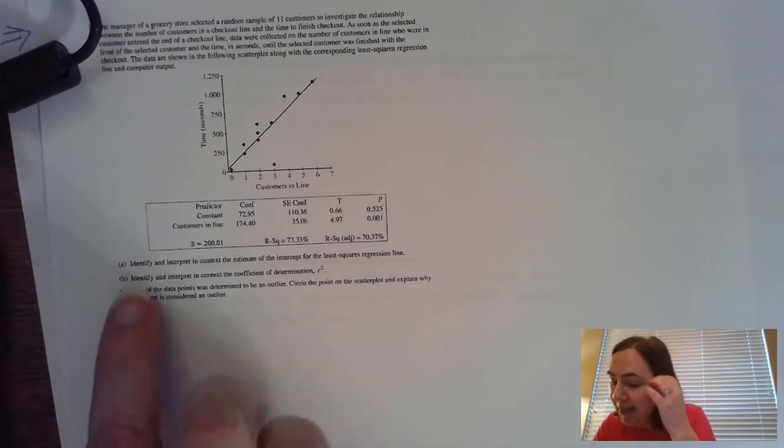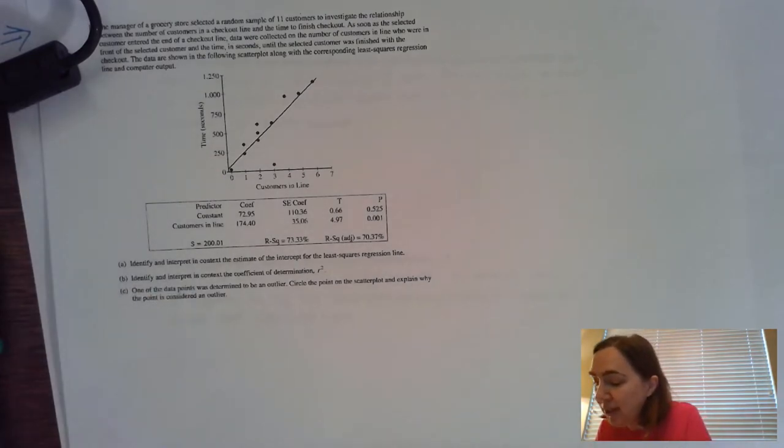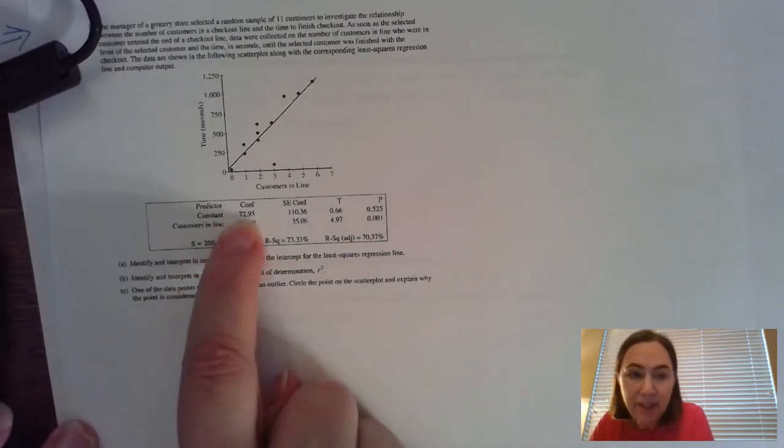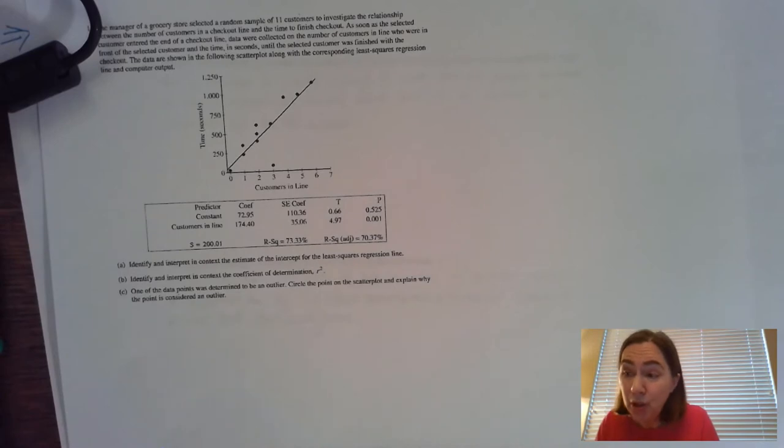For part A it says identify and interpret in context the estimate of the intercept. We know by looking at that the intercept is 72.95. Now it doesn't say anything about the slope. Don't interpret the slope too. Just interpret the y-intercept because otherwise they might grade it as parallel solutions and then you would not necessarily get credit.